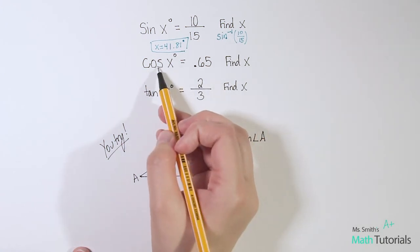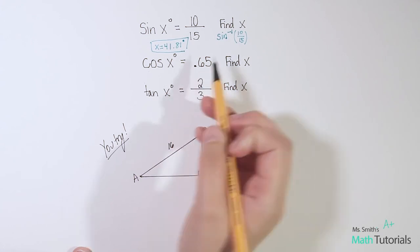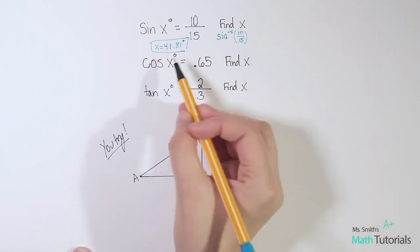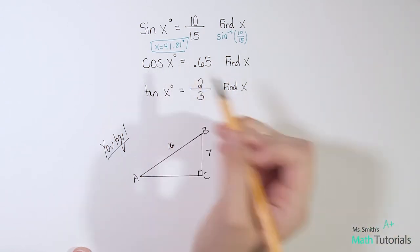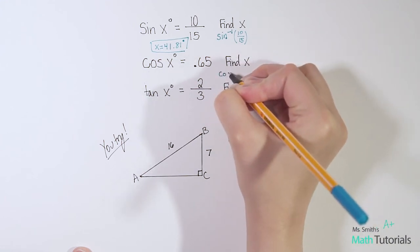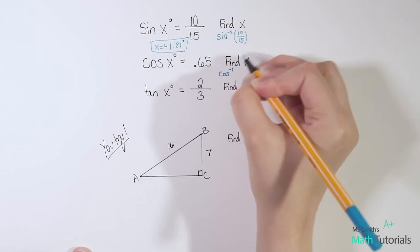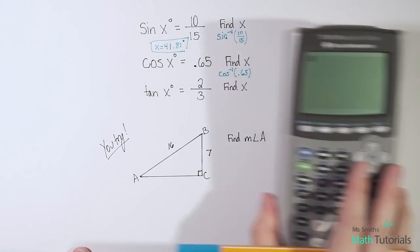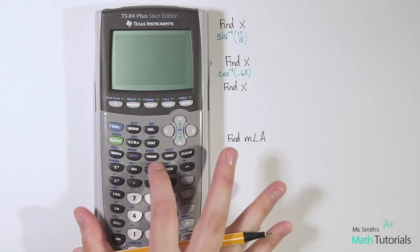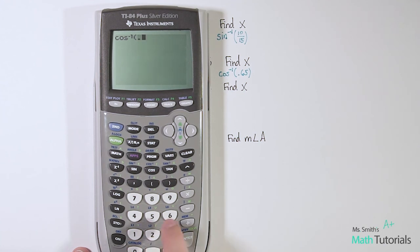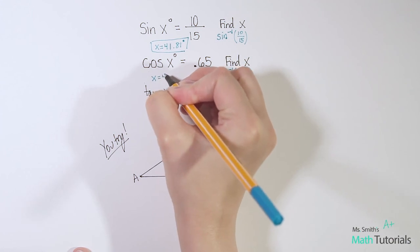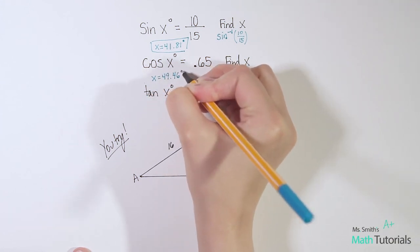Same thing here — this time they're saying cosine of x degrees equals 0.65. That's not a fraction, but that's okay; we just put in exactly what they give us. Since x is a missing angle, we say cosine to the negative one, and in the parentheses we put 0.65. Hit second cosine, enter 0.65, close the parentheses, and we get 49.46. So x equals 49.46 degrees.